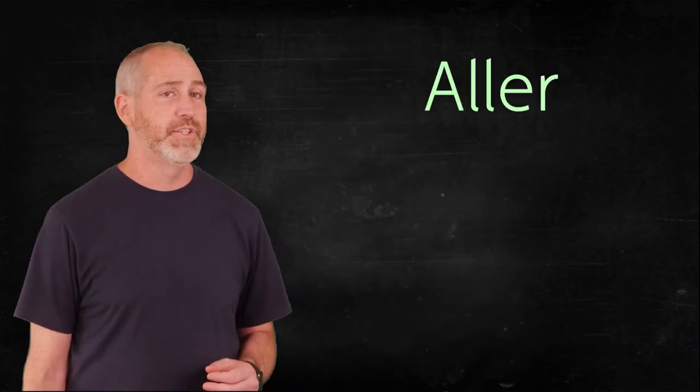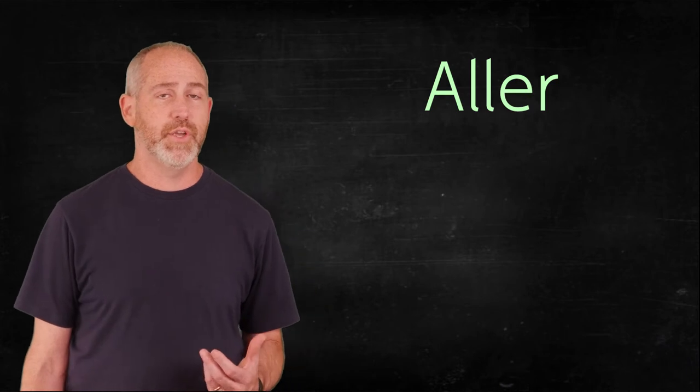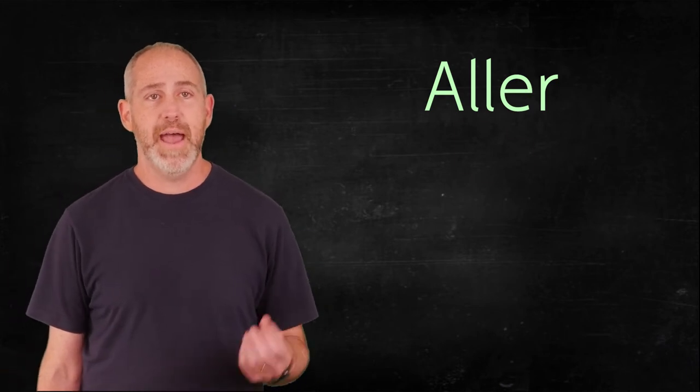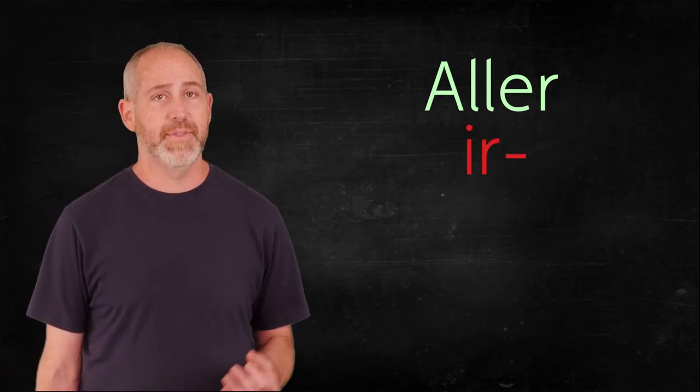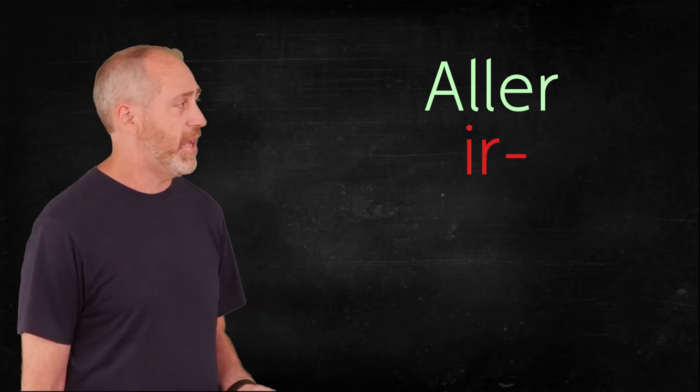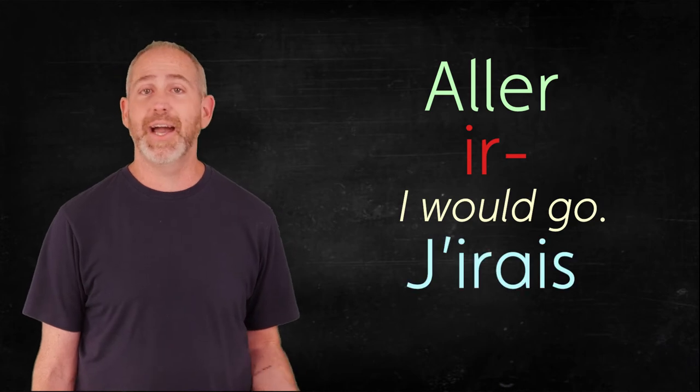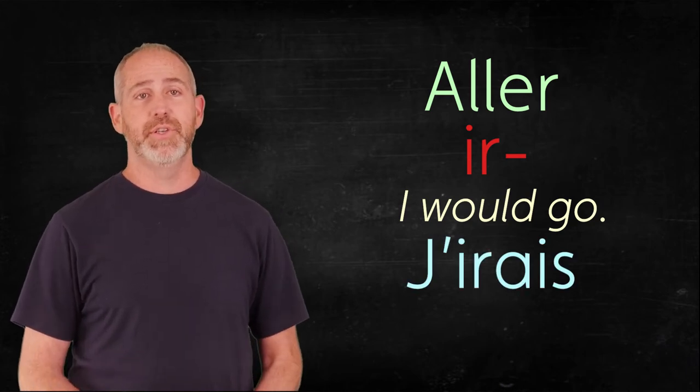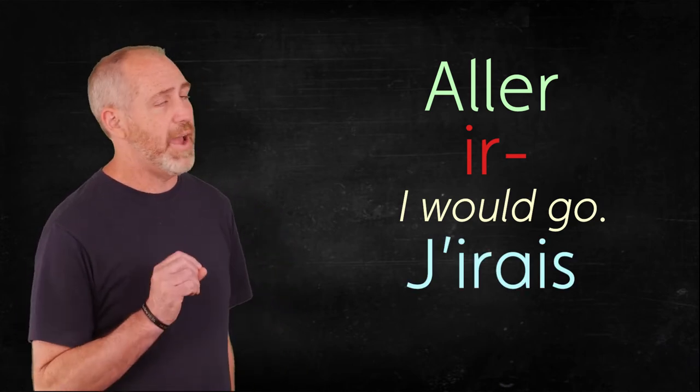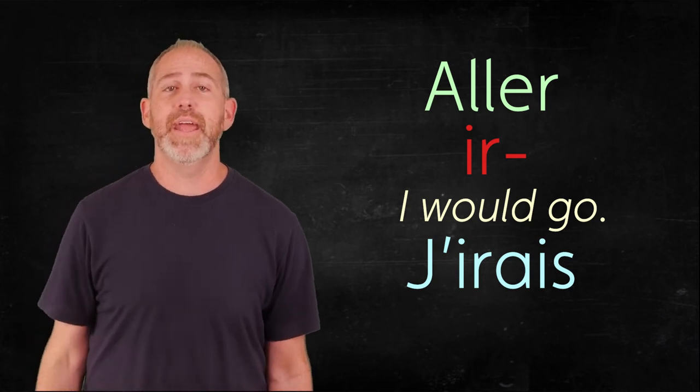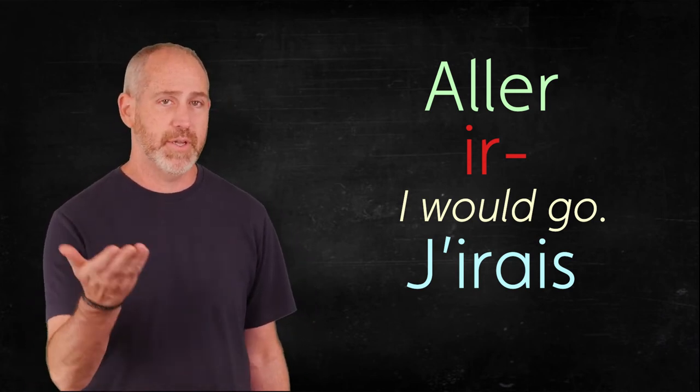The verb aller, to go, is going to use the stem I-R. This is going to be our starting point. So if I wanted to say I would go, I would simply say j'irais, j'irais. So you can see, I took the I-R and I just put the ending on there for A-I-S. So just take that irregular stem and there you go.